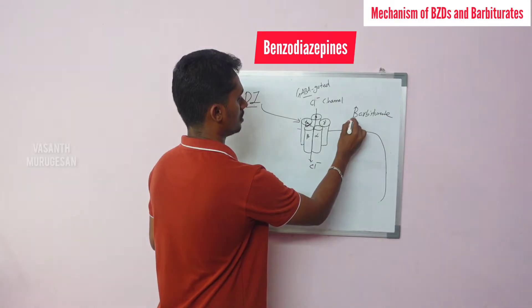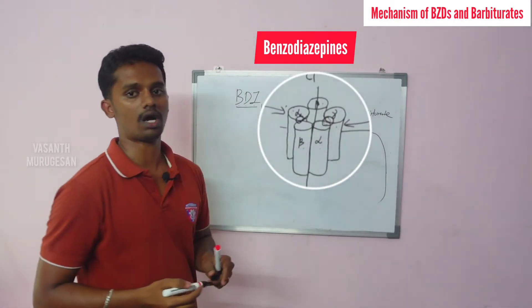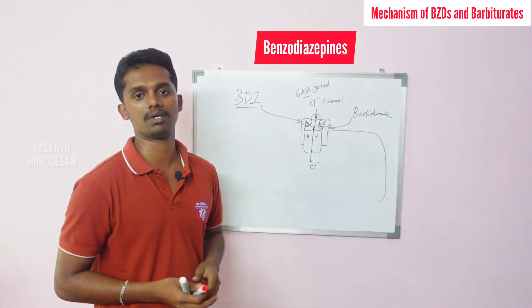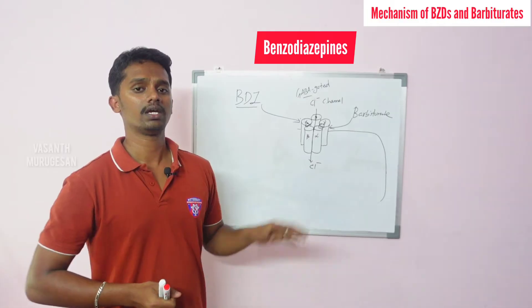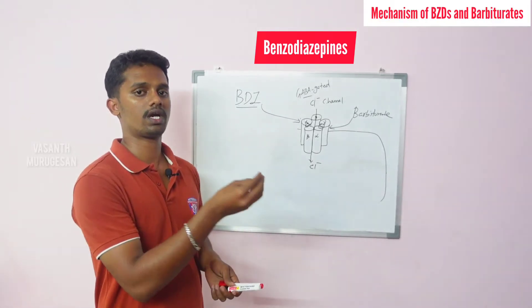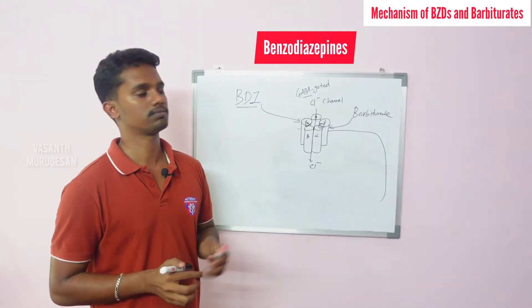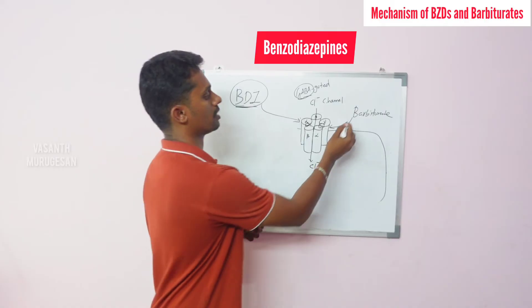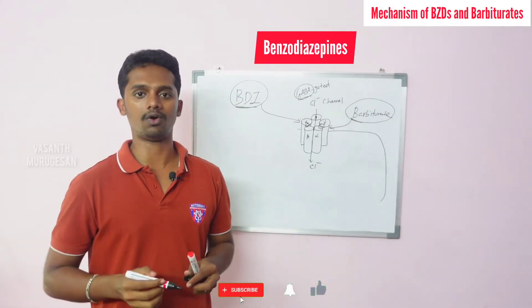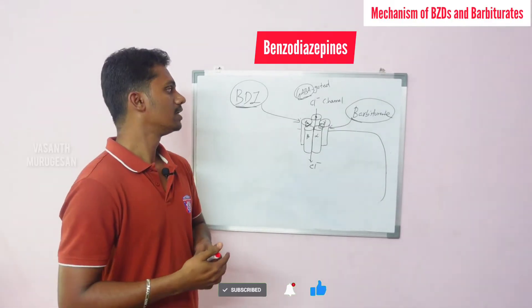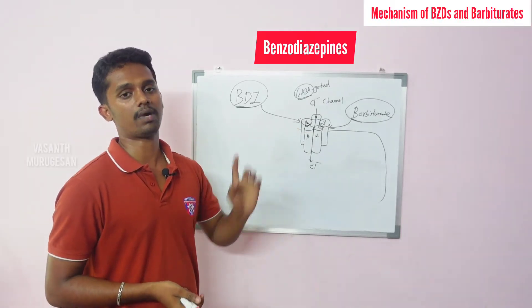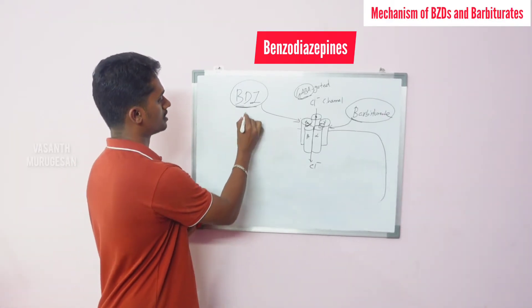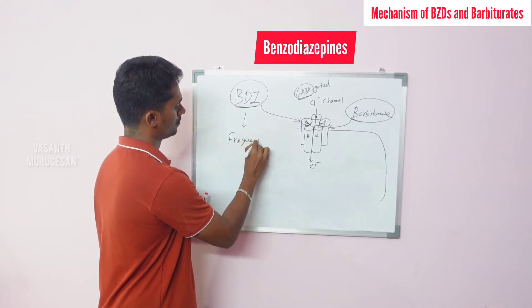Now for the differences: Benzodiazepines bind to the alpha and gamma subunit, while Barbiturates bind to the alpha and beta subunit. GABA also binds. The result is the same — chloride is allowed in. GABA is the primary ligand; with Benzodiazepines, BDZ also becomes the ligand; without Barbiturates, Barbiturates become the ligand. GABA directly opens the chloride channel. Now, what do Benzodiazepines and Barbiturates do differently?